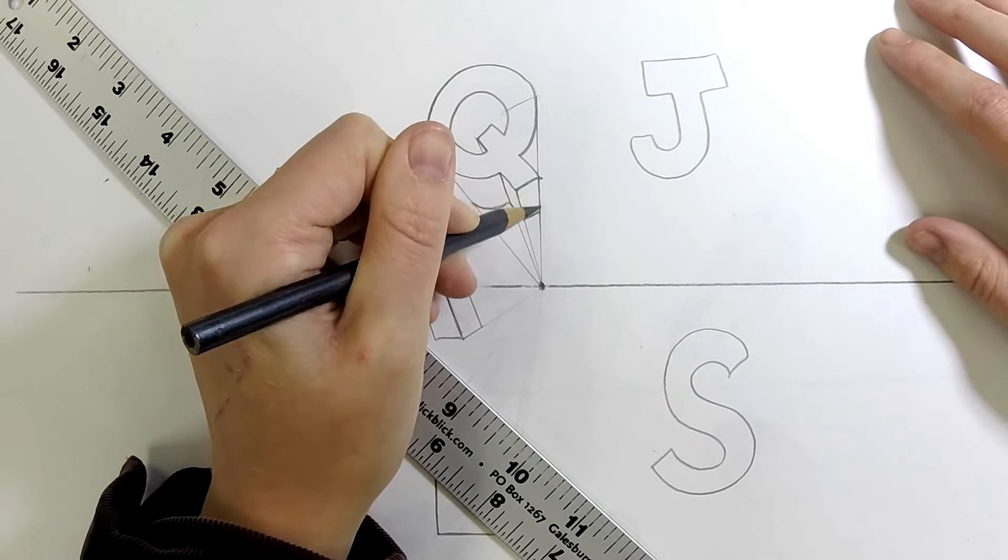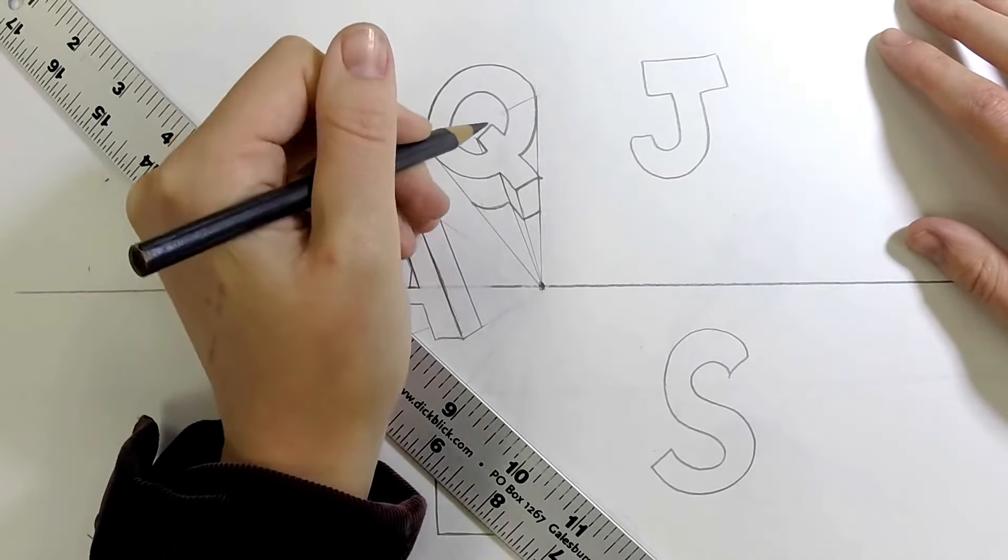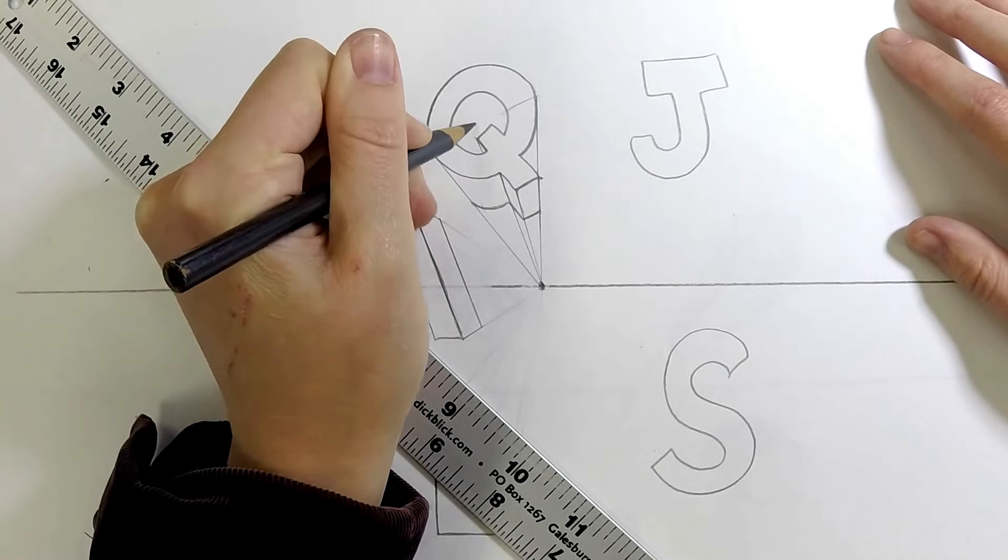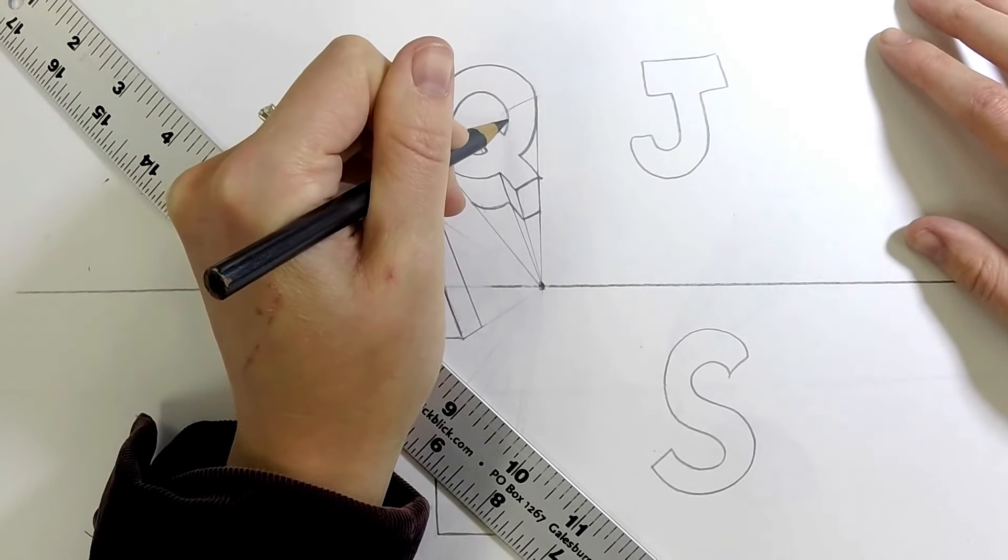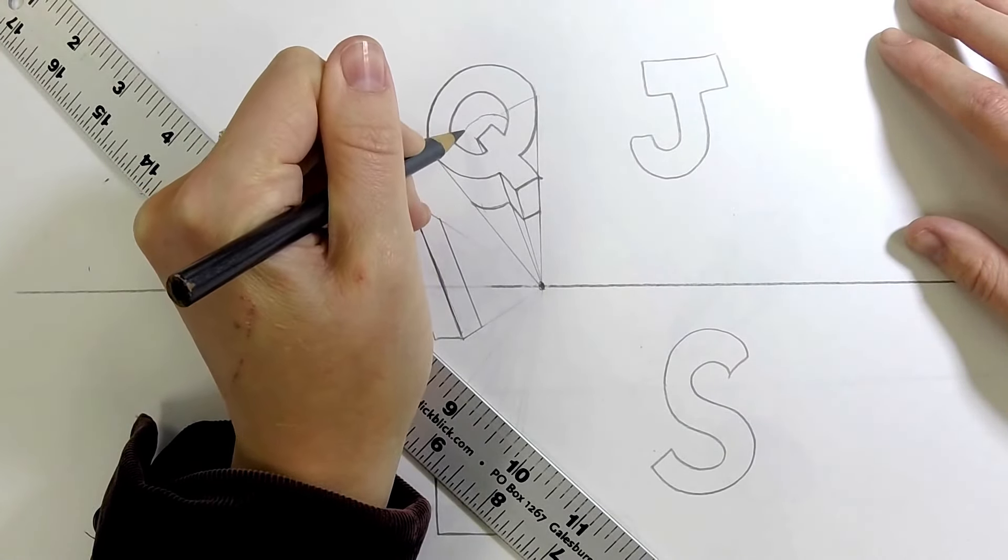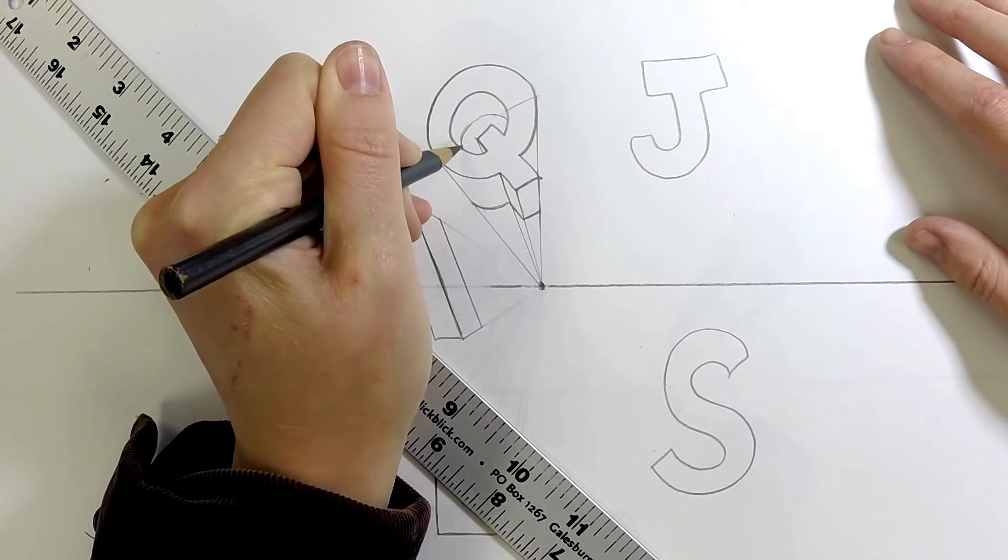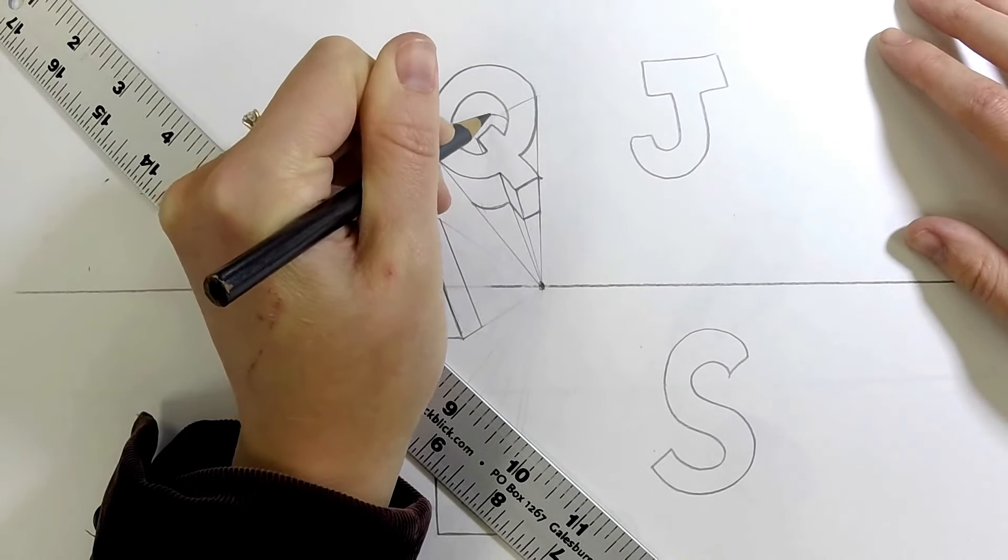And then remember it's kind of like having an identical letter right behind it. So we're also going to have some inside of the Q. So we're going to follow those curves to make our parallel lines. And the more practice you have the less you need to use your ruler for the smaller pieces. But I do recommend it when you're beginning. And then remember we have that whole inside of the Q that we need to see as well because it is behind it.